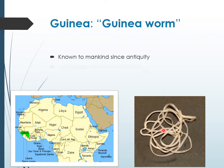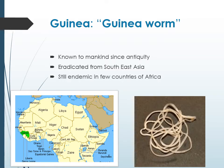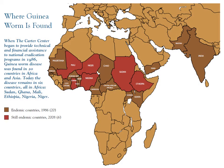This worm is known to mankind since antiquity. It has been almost eradicated from Southeast Asia, where it was prevalent earlier, and it was even prevalent in India — now we are free from this disease. However, it is still endemic in a few countries of Africa. In 1986, almost 20 countries were affected, including India, especially in the western regions of Rajasthan, Gujarat, and some parts of Maharashtra.